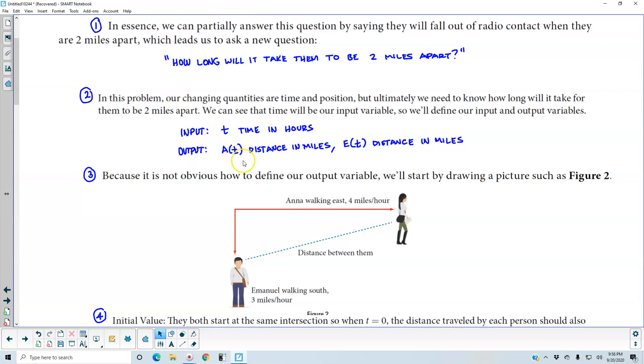The output, A(t), is the distance in miles, and E(t) is the distance in miles. So that means A represents Anna, and E is going to represent Emanuel.